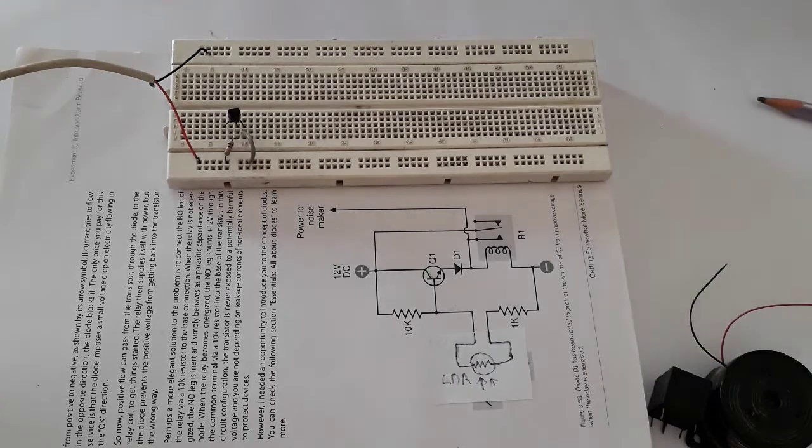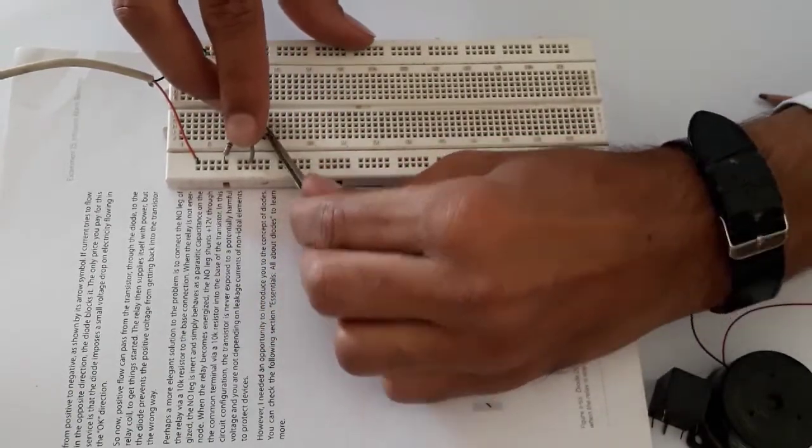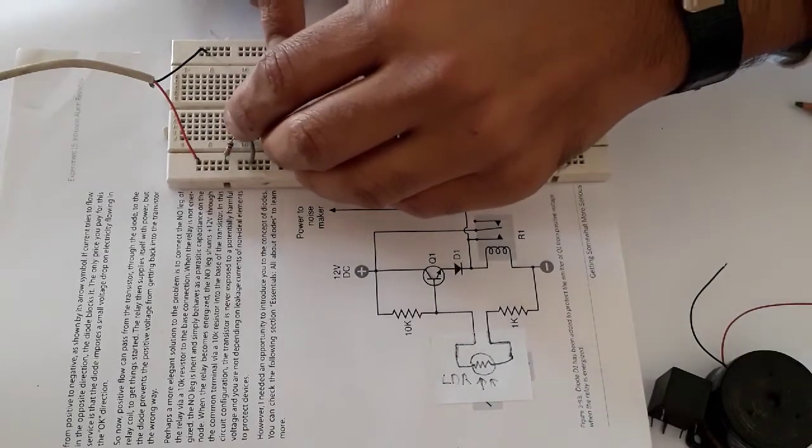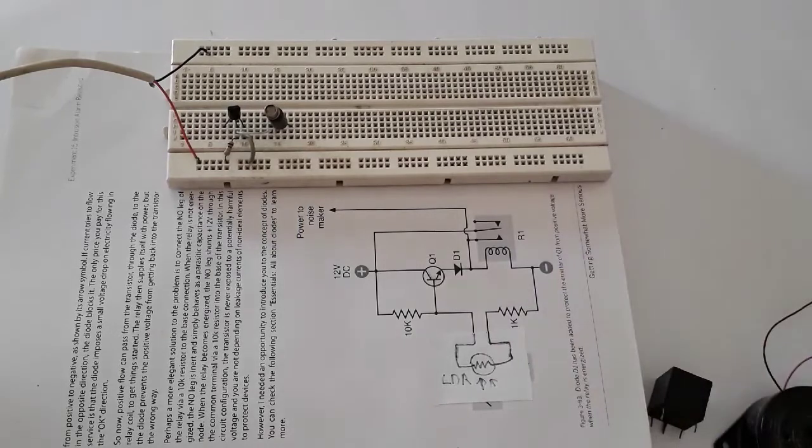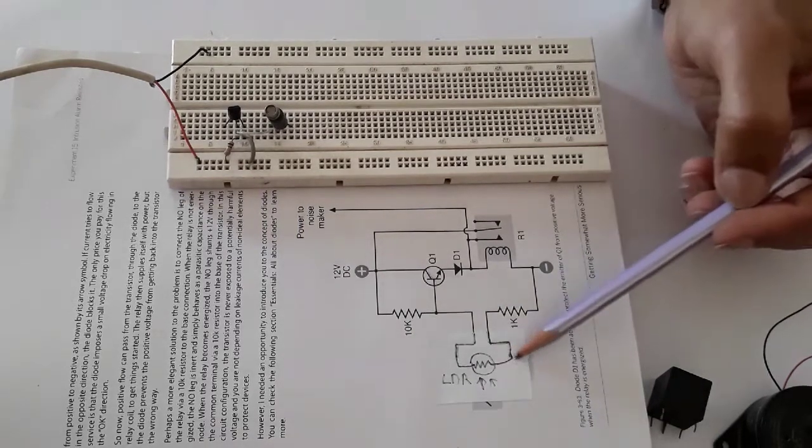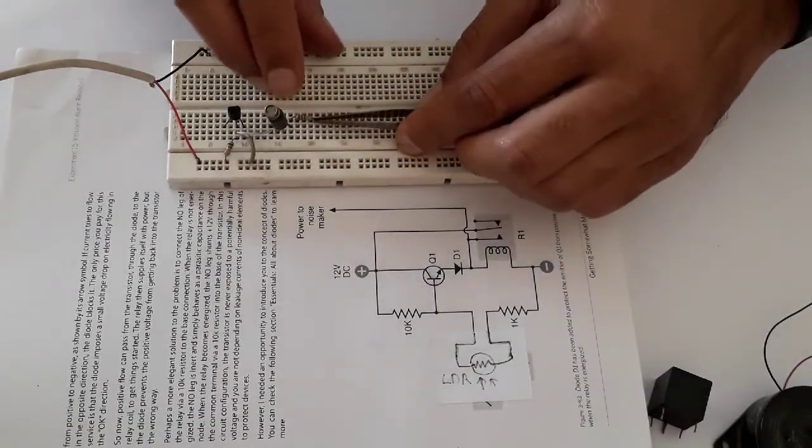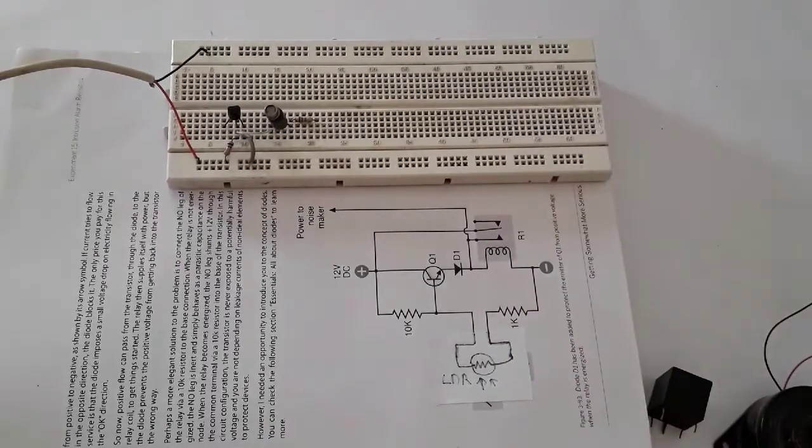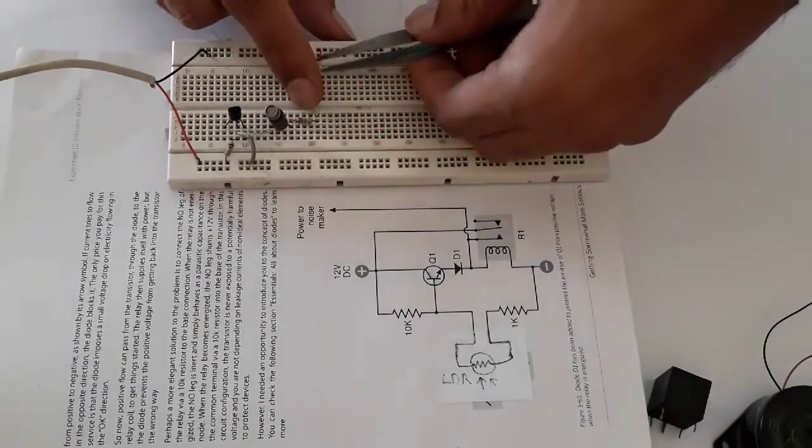Now we will put the jumper wire between the base and LDR. The other pin of the LDR will be connected with the 1 kilo ohm resistor to the negative terminal. Another jumper wire to this negative terminal.